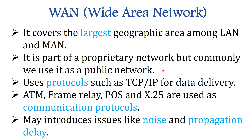In most wide area networks the subnet consists of two distinct components: transmission lines and switching elements. Transmission lines move bits between machines, and the switching elements are specialized computers that connect three or more transmission lines. Transmission lines can be made up of copper wire, optical fiber, or even radio. Routers are the electronic devices used as switching elements in these networks, using protocols such as TCP/IP for data delivery.